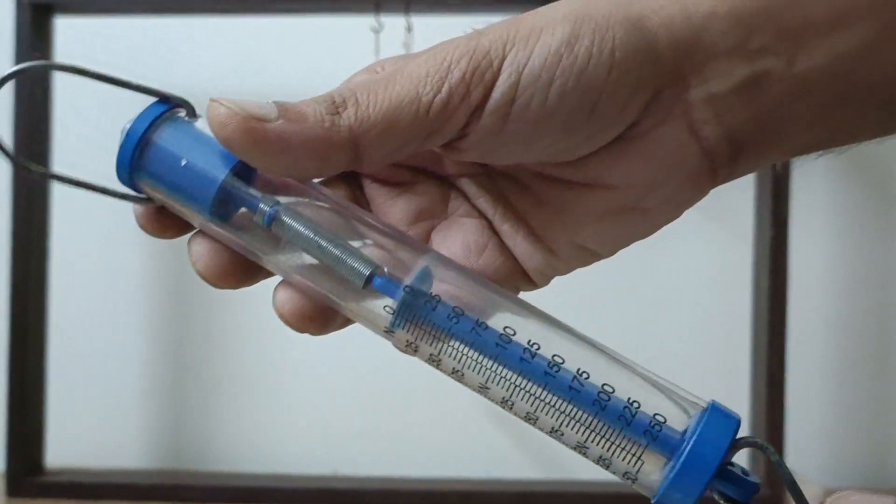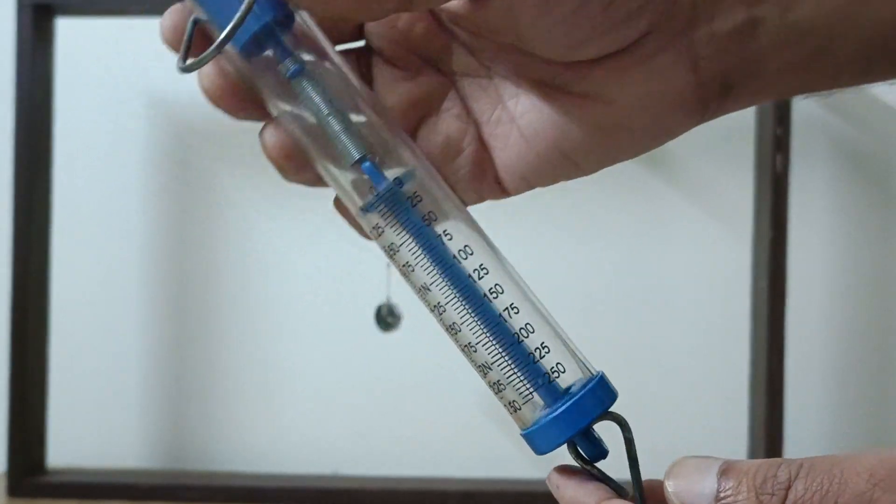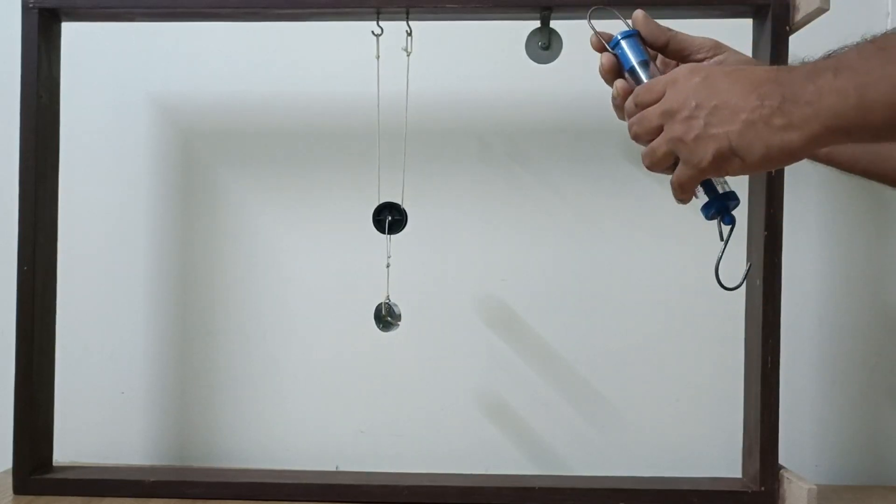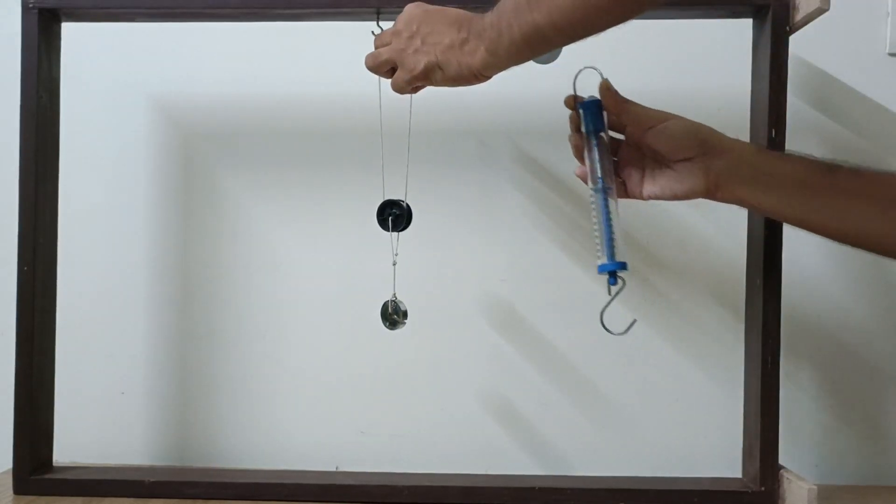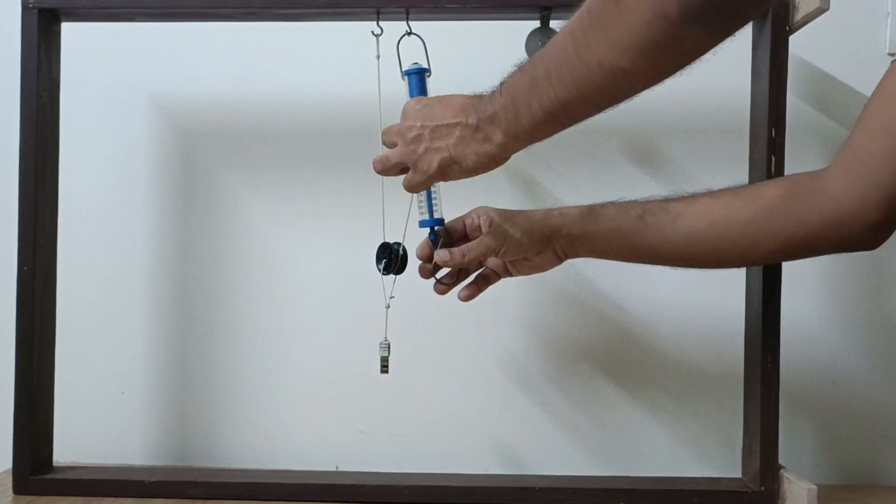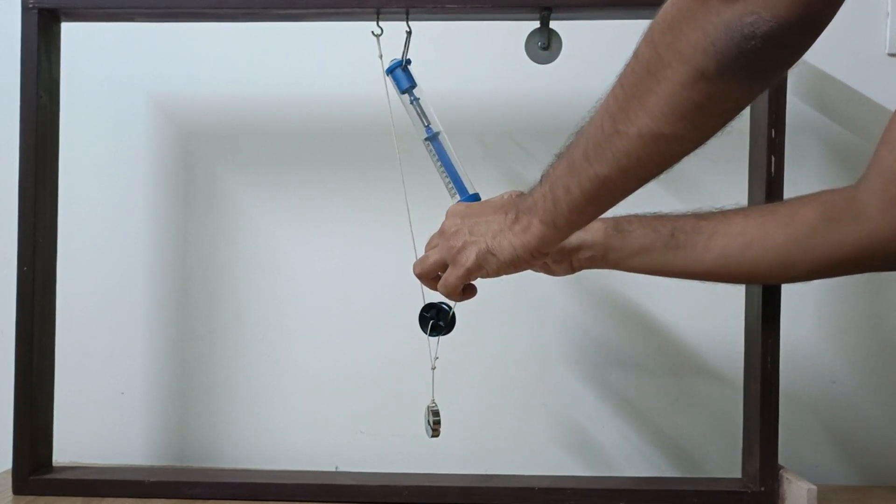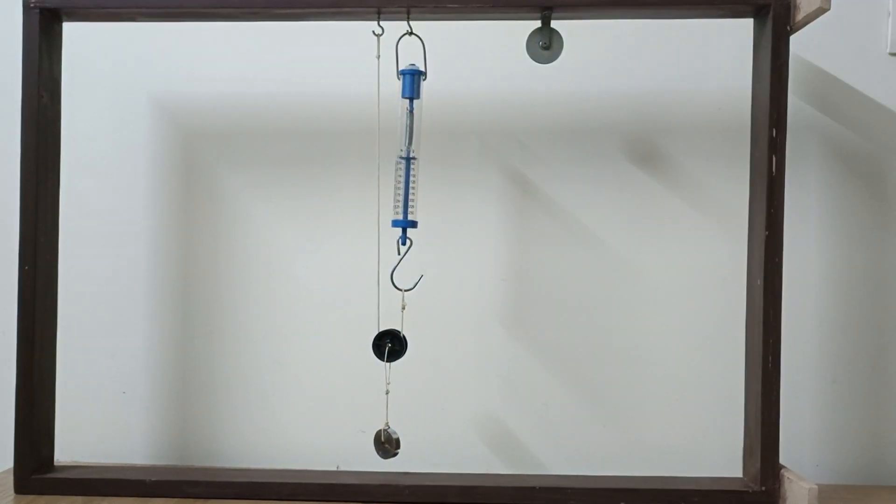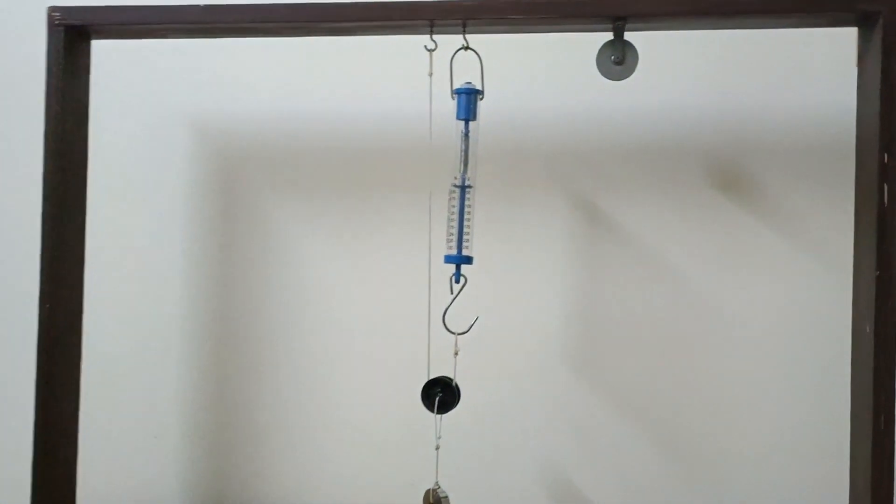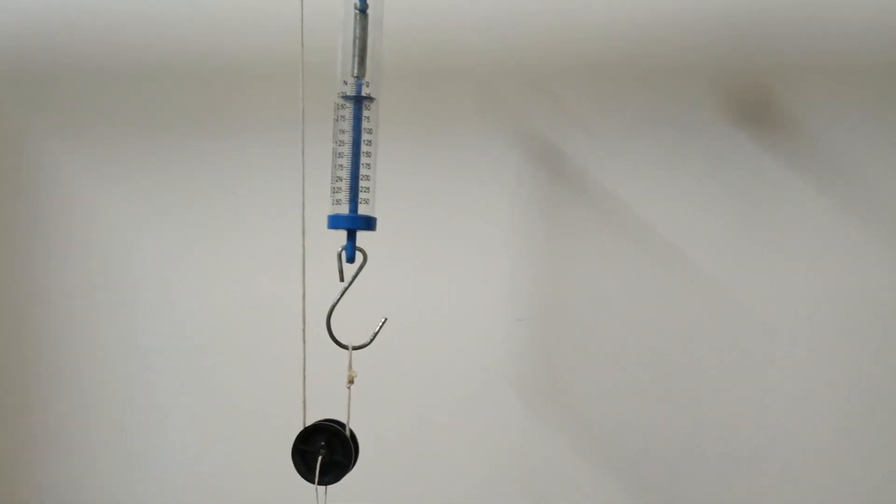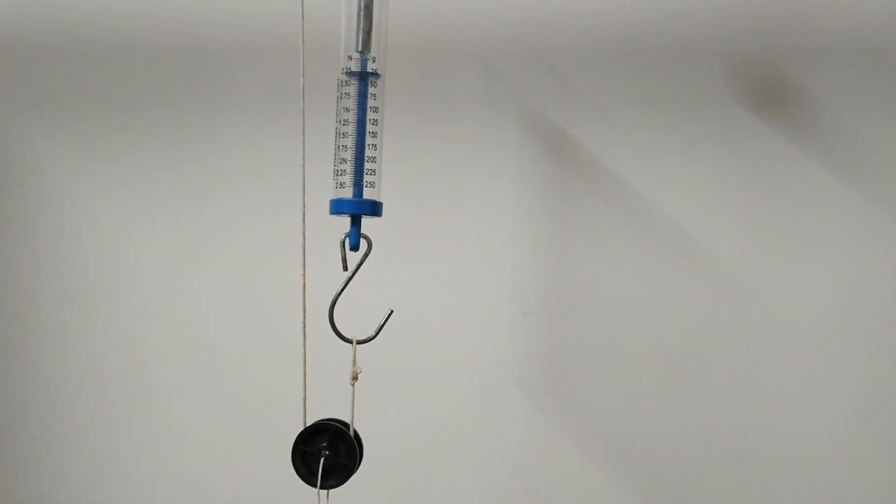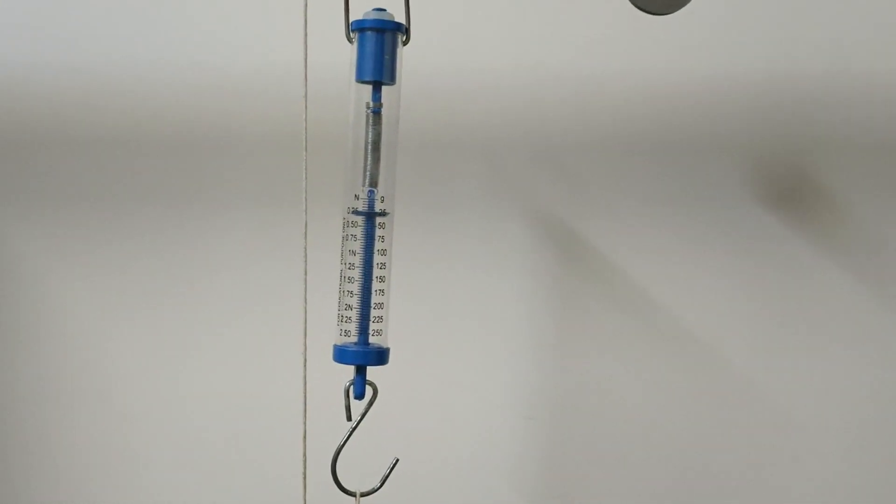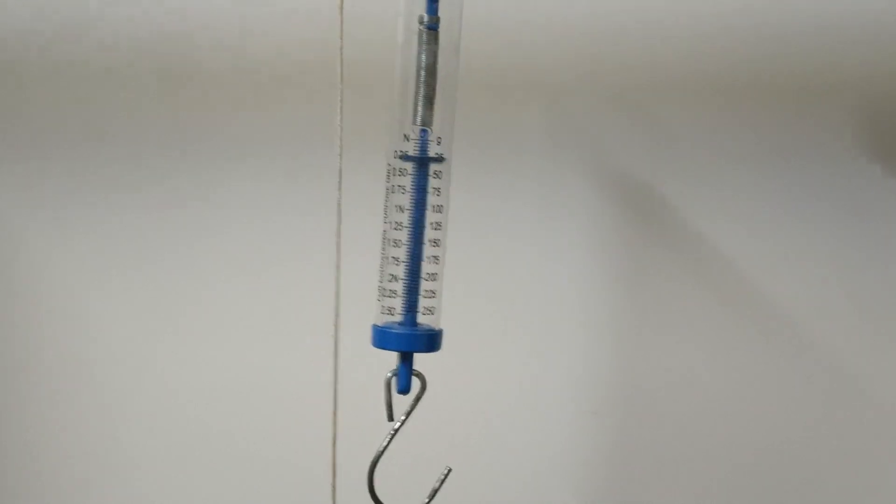Now let's attach a spring balance to the effort end and measure the magnitude of the effort. We see that the effort is 25 gram force, so the effort is half of the load. Hence the single movable pulley acts as a force multiplier.